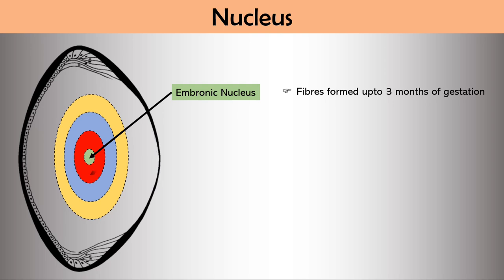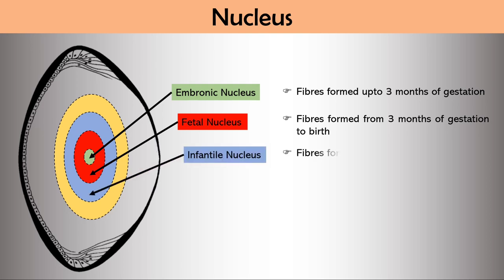After that fetal nucleus formed and contains fibers formed from 3 months of gestation to birth. When we are born we have embryonic and fetal nucleus. Then fibers formed from birth to puberty are collectively called as infantile nucleus. As lens grows throughout life, after puberty whatever formed is known as adult nucleus.